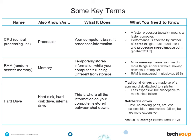Storage happens on your computer's hard drive, and there are two key types to be aware of. One is a traditional drive, made up of a spinning disk attached to a platter. Because these traditional drives have moving parts, they're susceptible to mechanical failure. Another kind of drive, somewhat newer, is a solid state drive. As the name implies, solid state drives don't have any moving parts, so they're less susceptible to mechanical failure than a traditional drive — but they do tend to be more expensive.